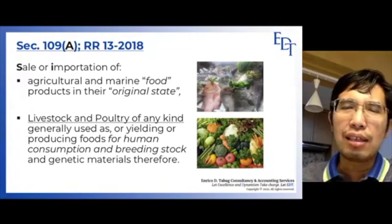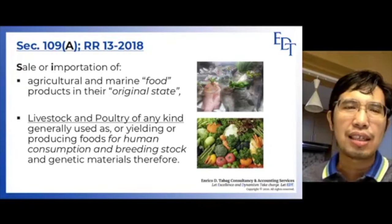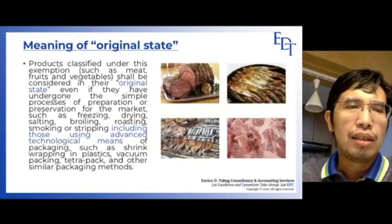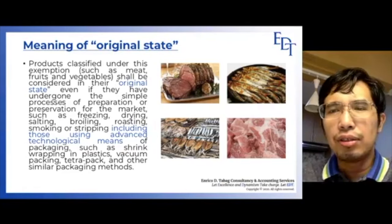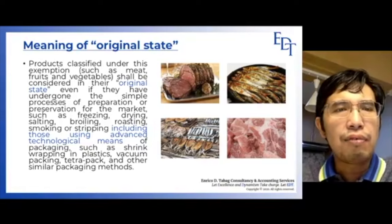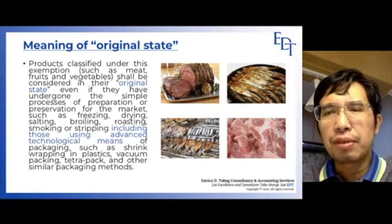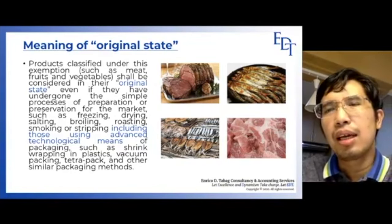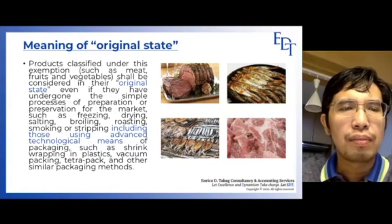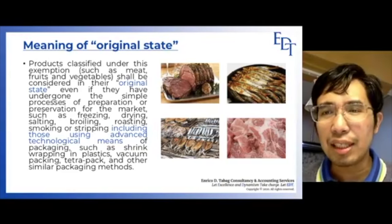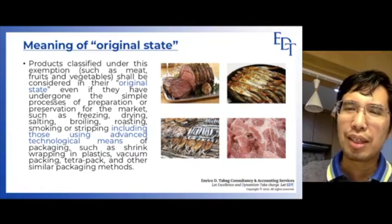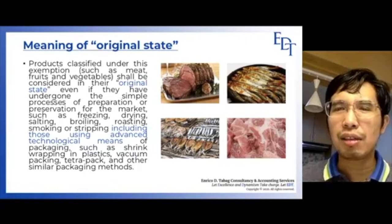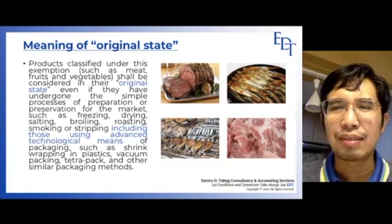When do we say that the agricultural and marine food product is considered in their original state? Under the applicable revenue regulation, products classified under this exemption such as meat, fruits, and vegetables shall be considered in their original state even if they have undergone simple processes of preparation or preservation for the market, such as freezing. So although frozen, under this VAT exemption category it will still fall under original state, therefore VAT exempt.